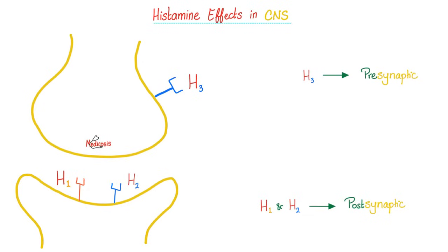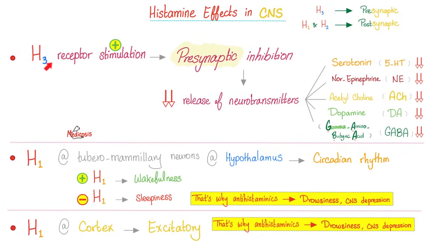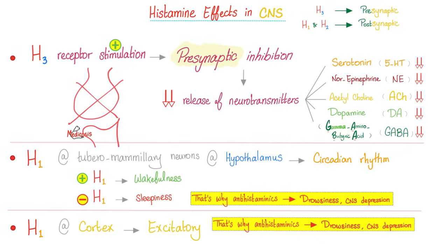In the CNS, H1 and H2 receptors are postsynaptic, but H3 is presynaptic. When you stimulate the presynaptic H3 receptor, it causes presynaptic inhibition — decreasing release of neurotransmitters from the presynaptic neuron: serotonin, norepinephrine, acetylcholine, dopamine, and even GABA. H1, which is postsynaptic, is present in the hypothalamus — specifically the tuberomammillary neurons — responsible for the circadian rhythm. If you stimulate H1 in your brain, you're awake. That's why H1 blockers (antihistamines) make you drowsy, especially first-generation ones. Stimulation of H1 at the cortex causes excitation, so H1 blockers make you drowsy, sleepy, and depressed.